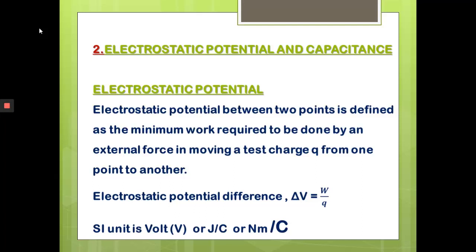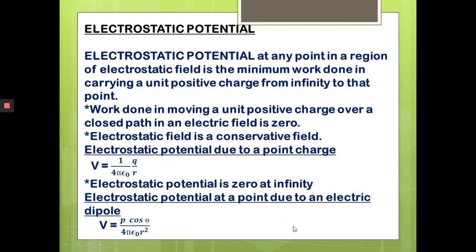The formula to find out the electrostatic potential difference is: ΔV equals W by Q. The unit is volt, or since W is in joules, we can write it as joule per coulomb. Either way is acceptable.